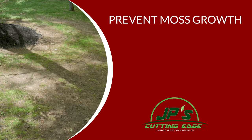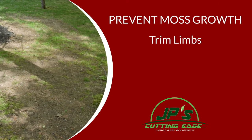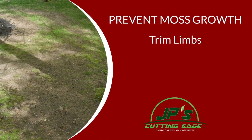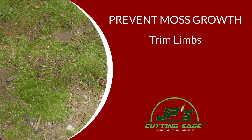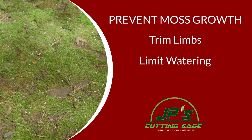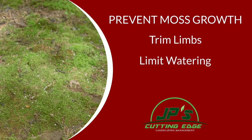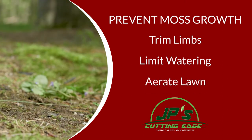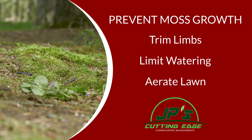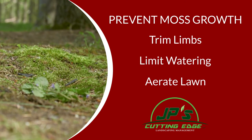To prevent moss growth in your yard, trim up the limbs around your home to allow more sunlight to your lawn. That allows the soil to dry out. Limit watering in areas that get less than four hours of sunlight each day. If water is puddling on your lawn, your soil is too compacted. Aeration will loosen the tension of the soil, allowing water to penetrate.